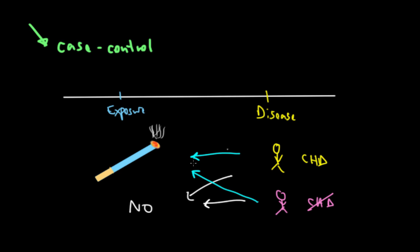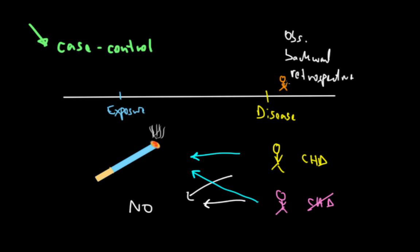In terms of the parameters from the first video: it's observational because there's no randomization by the experimenter. It has backward directionality because the outcome is determined before the exposure status. And it's retrospective because the study starts once the disease is already known. To symbolize that, the experimenter starts after the outcome status is known and looks back towards the exposure to see what may have caused the specific disease.